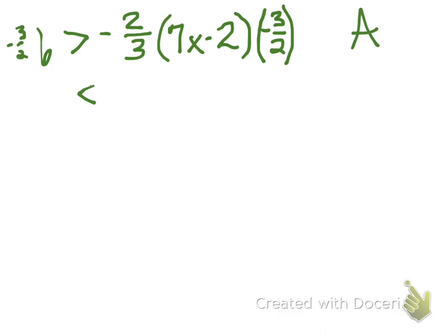Three times six is eighteen. Eighteen divided by two is nine. So I've got negative nine is less than 7X minus two. And now we're back to a basic inequality. We can even think of it as an equation.